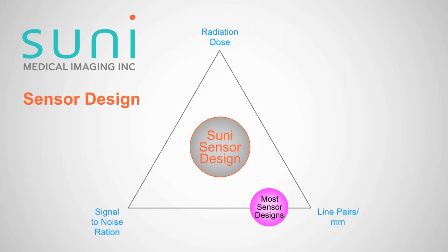If you make the pixel very small, you have a good ability to detect high line-pairs-per-mm, but you sacrifice your signal-to-noise ratio. If you make the pixel large, you pay a price on line-pairs-per-mm performance but you gain on the signal-to-noise ratio.